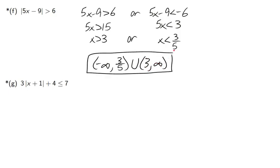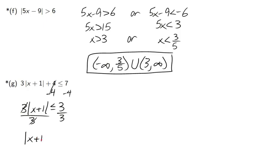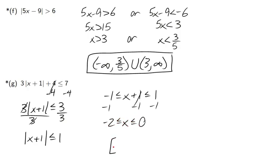For the next practice problem: subtract 4 from both sides to get 3 times the absolute value of (x + 1) ≤ 3, then divide by 3. Since 3 is positive, the sign stays the same. We get the absolute value of (x + 1) ≤ 1. Applying the less than or equal to rule: negative 1 ≤ x + 1 ≤ 1. Subtracting 1 from all three sides gives negative 2 ≤ x ≤ 0, which is [−2, 0] with brackets.